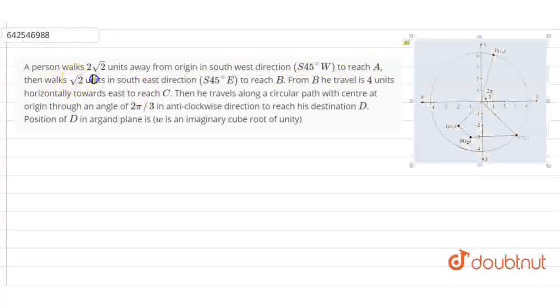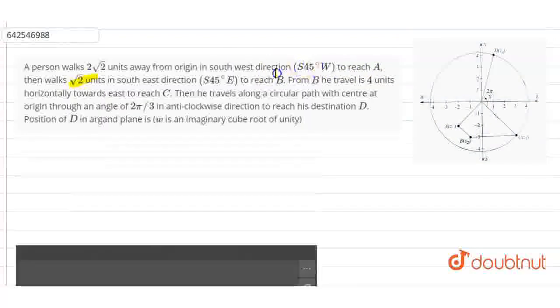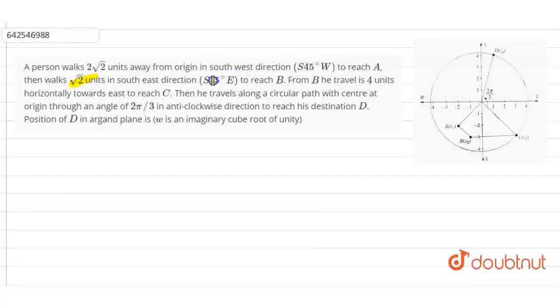Then walks 2 units in south direction, S 45 degrees east, to reach B. From B he travels 4 units horizontally toward east to reach C.